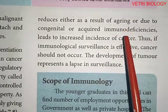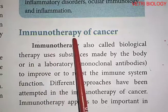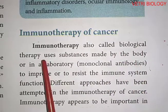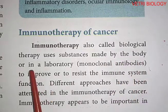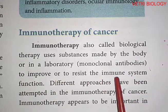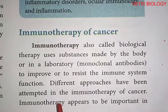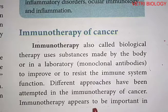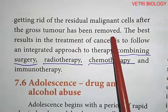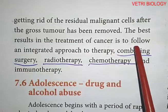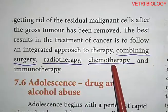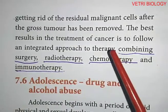The immune system uses substances made by the body or in a laboratory — called monoclonal antibodies — to improve or restore immune system function. Different approaches have been attempted in the immunotherapy of cancer. Immunotherapy appears important in getting rid of residual malignant cells after the gross tumor has been removed. The best results in cancer treatment follow an integrated approach combining surgery, radiotherapy, chemotherapy, and immunotherapy.